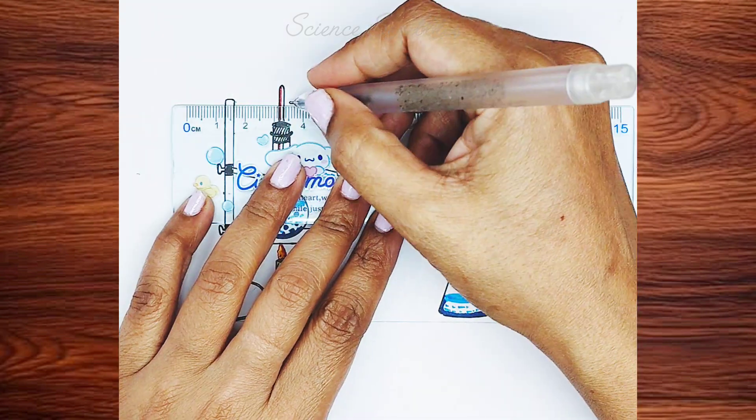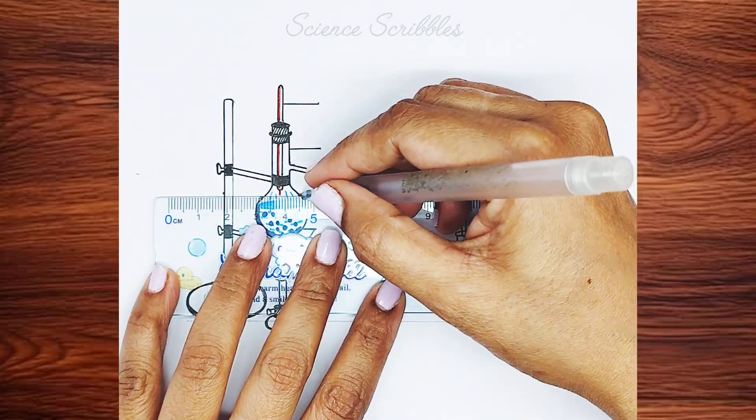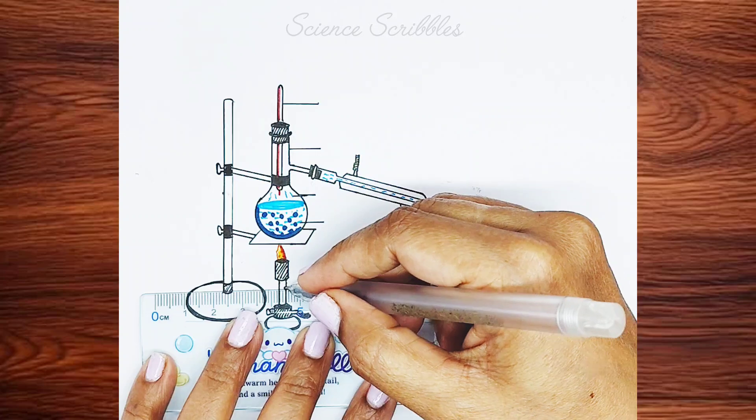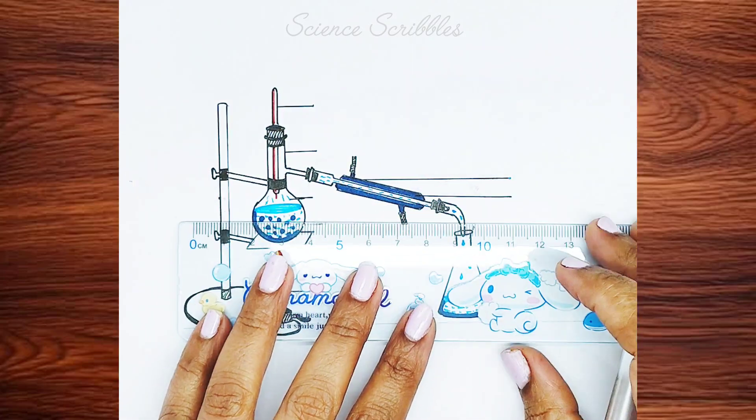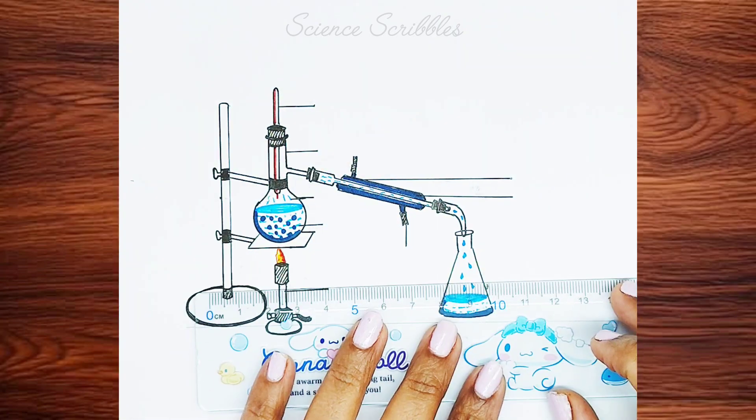This is the final step, labeling. Draw lines to label the parts, and kindly follow along. Make sure to add arrows at the end of each line. Now, label the parts one by one.